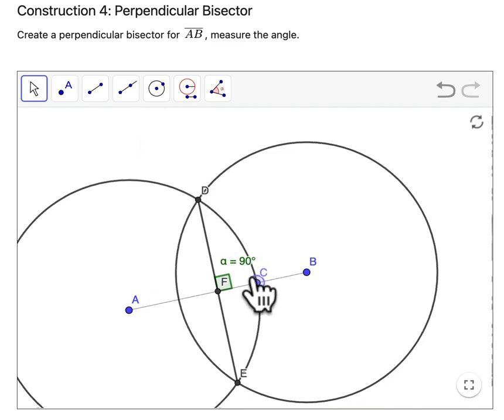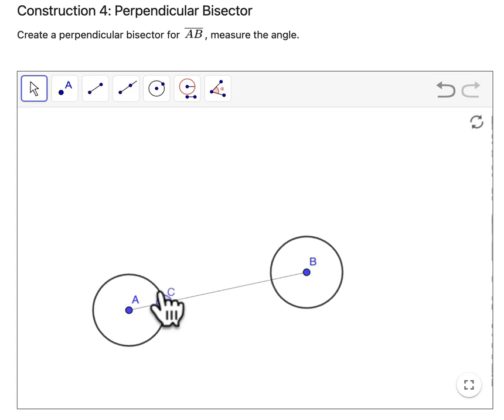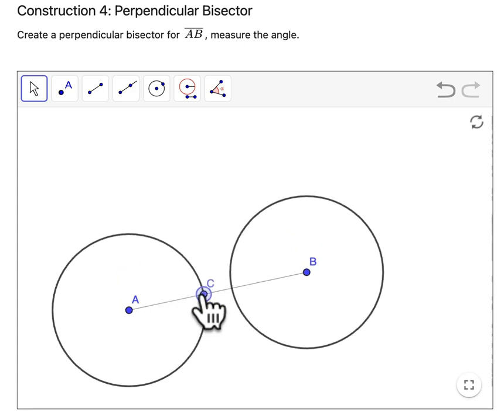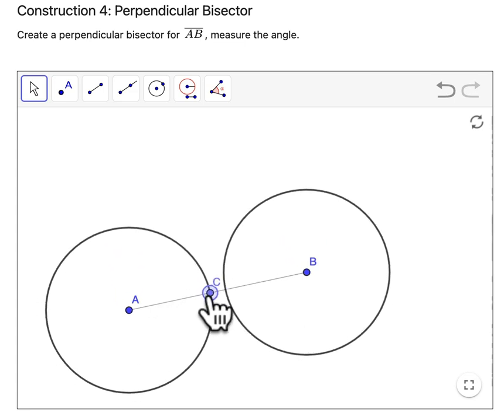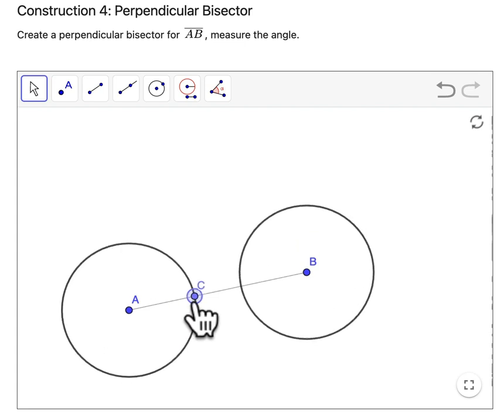I also encourage you to play around with the circles in general. You often might have heard that to create a perpendicular bisector, you have to create circles that are more than halfway. You can see why that is here. If the circles are too small, they won't cross at all.